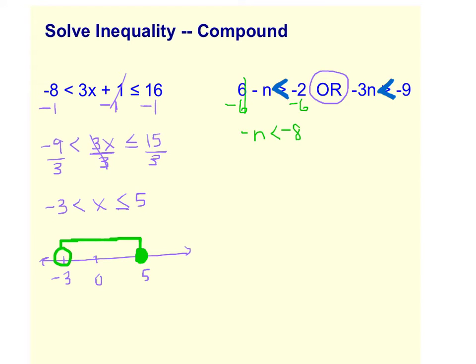And when we have a negative variable like this, we don't want to leave it negative. So go ahead and throw a 1 in front of it. And now it looks like we're multiplying N times negative 1. Which means we have to divide both sides by the negative 1.